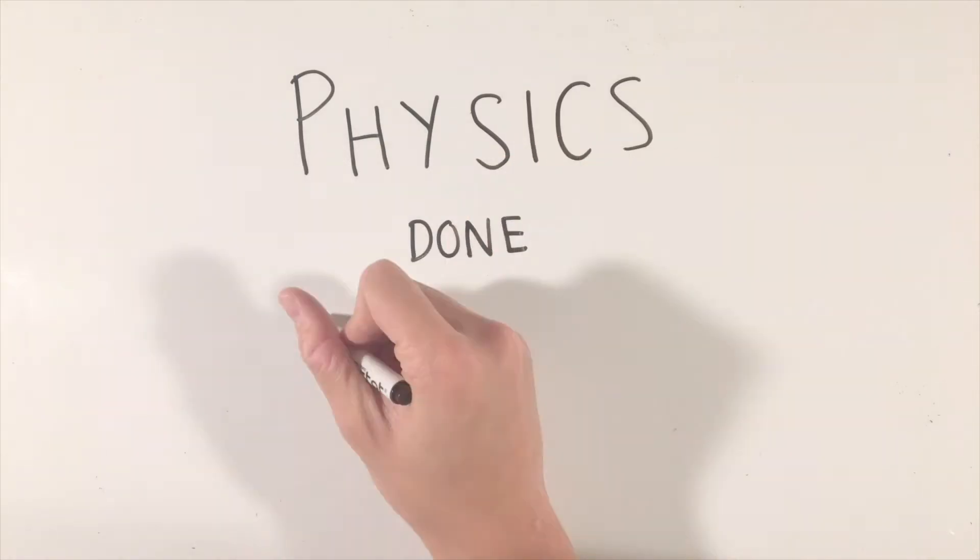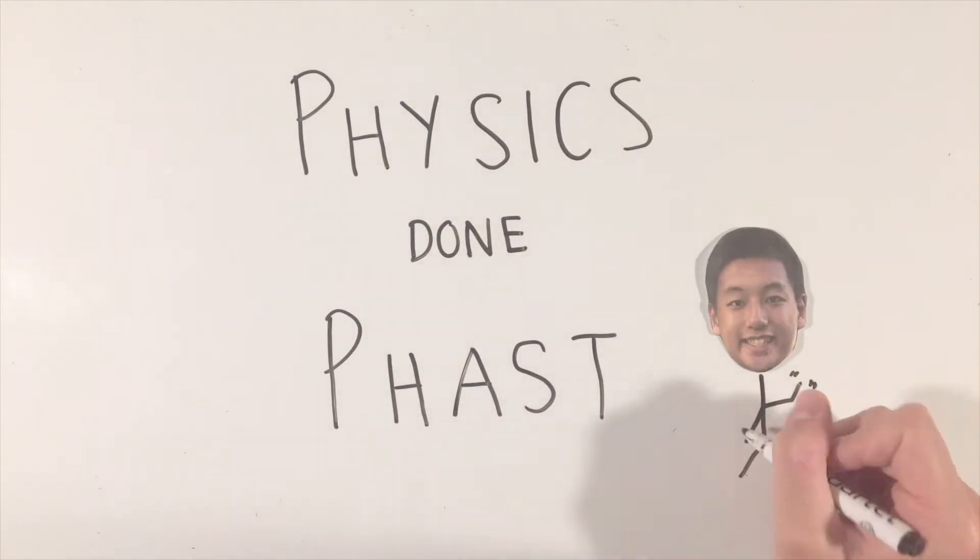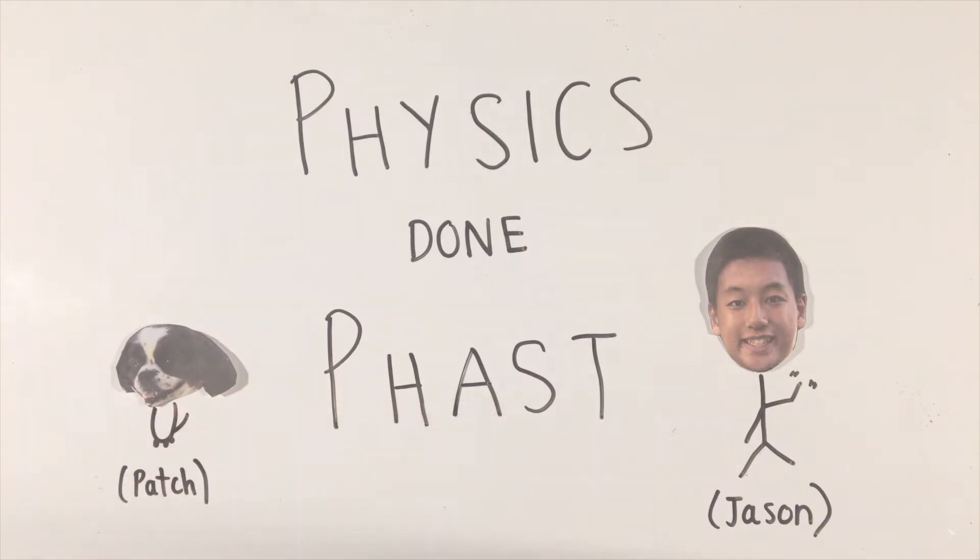While we hopefully understand the basics of position, velocity, and acceleration, how do we express and analyze these quantities graphically?